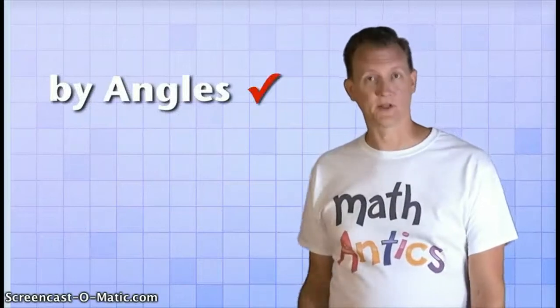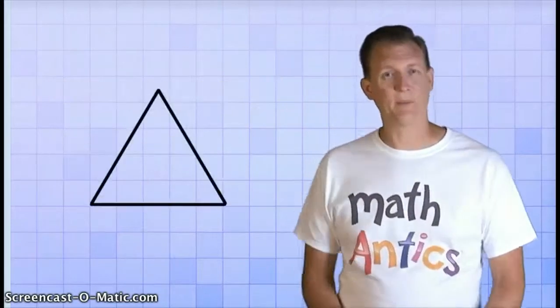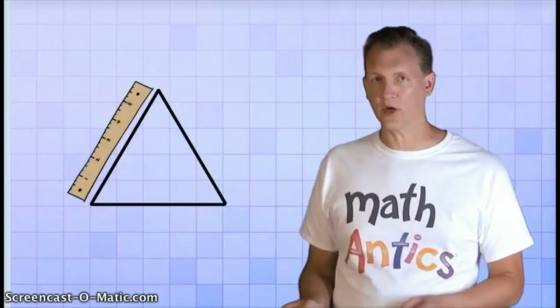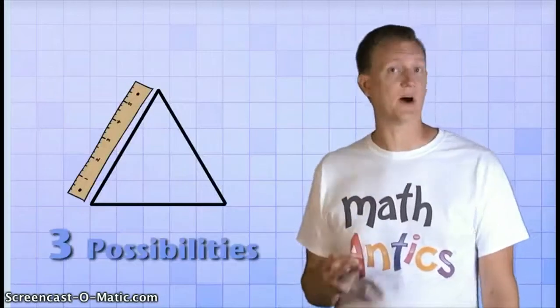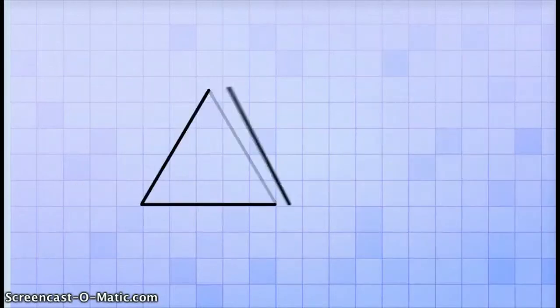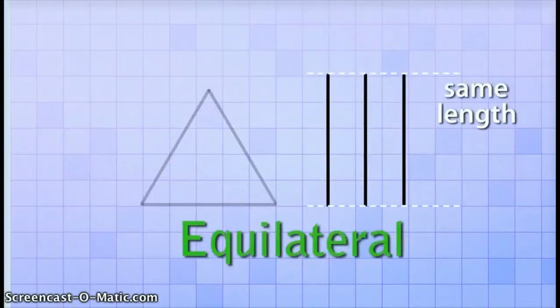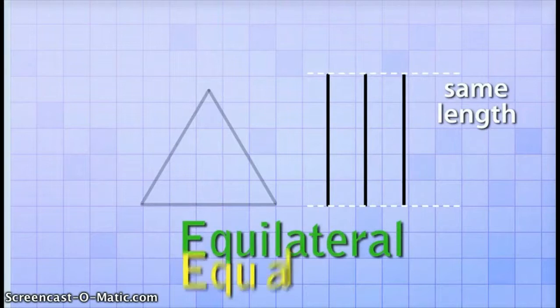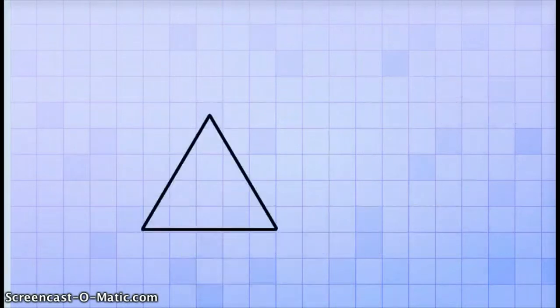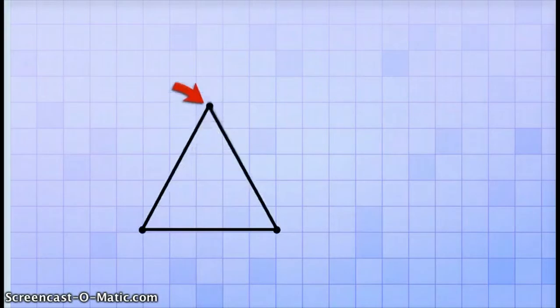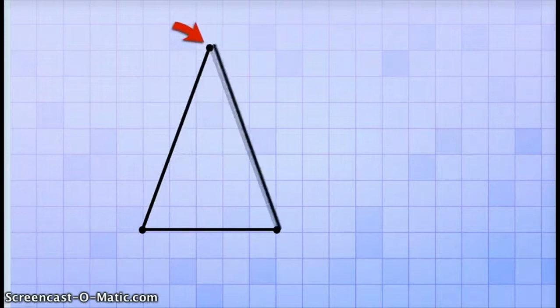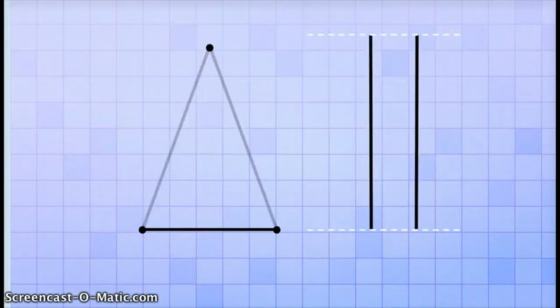But we can also classify triangles by their sides. If we pay close attention to the length of each side of a triangle, we can see that there's three possibilities. First of all, if all three sides of a triangle are exactly the same length, then we call it an equilateral triangle. It's kind of a long word, but it's easy to remember, because it sounds like it has the word equal in it. To see the second possibility, let's take the top vertice of our equilateral triangle and move it up like this. See what happened? Two of the triangle sides got stretched by the same amount, but the bottom side remained the same.